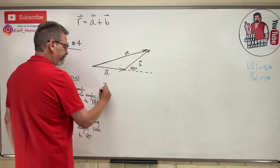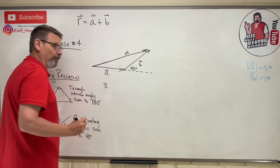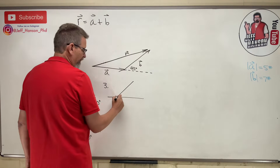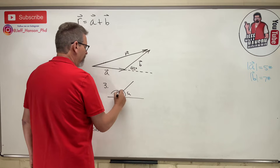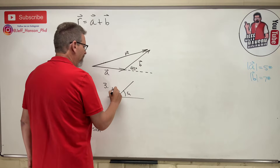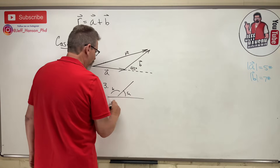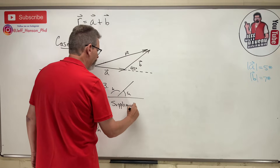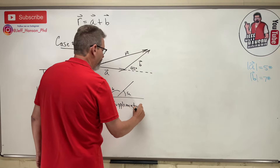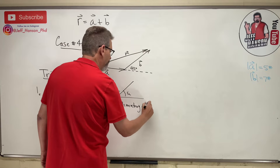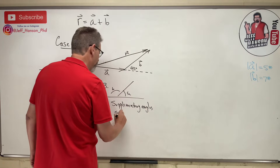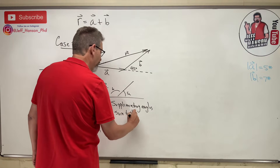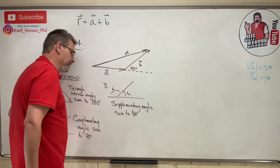Number three: supplementary angles — angles A and B — sum to 180 degrees.